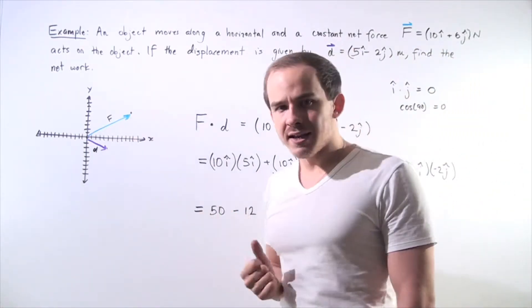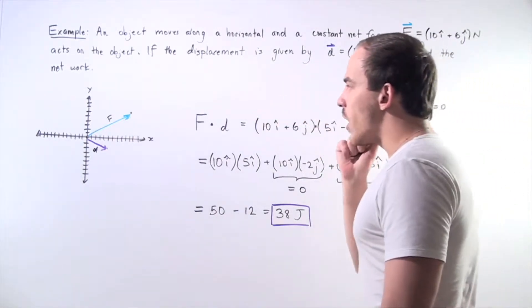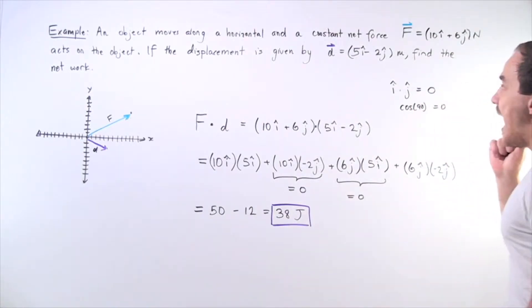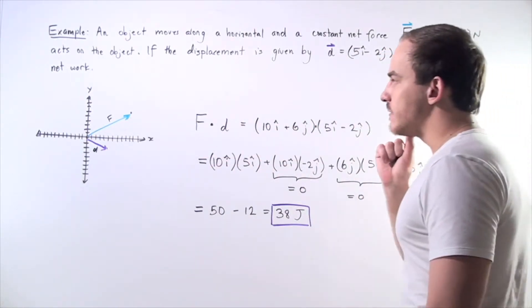Well let's begin by plotting our two vectors f and d on the xy plane. So the blue vector is our force vector and the purple vector is our displacement vector.